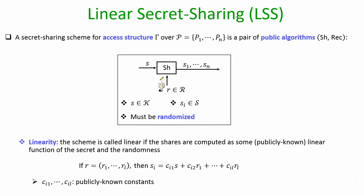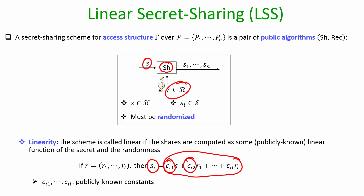Just to recap: when do we say that a secret sharing scheme is a linear secret sharing scheme? If the shares are computed in the sharing algorithm as per some linear function of the secret and the randomness — namely, each share S_i should be computed as some linear combination of the secret and the individual components of the randomness, as per some publicly known constants.